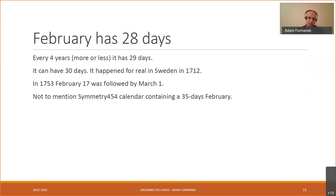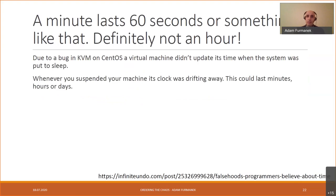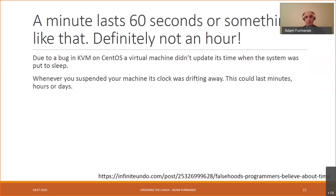There are also other calendars — like the Symmetry454 calendar which has 35 days in February — but hopefully we don't need to deal with those. Another real example: a bug in KVM on CentOS where pausing a virtual machine meant its clock wasn't updated when resumed — so a 'minute' could physically last hours without the clock knowing. This makes using clocks in computer systems much harder than we typically think.